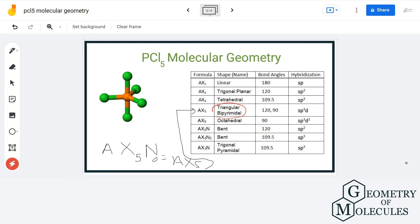have trigonal bipyramidal shape with bond angles of 90 degrees and 120 degrees, as explained earlier, and the hybridization is sp3d.